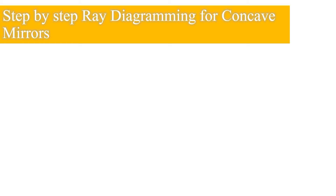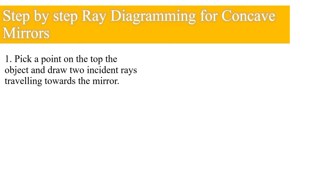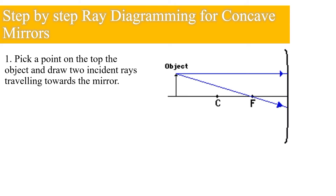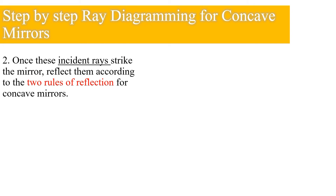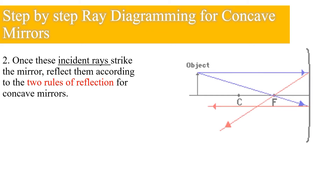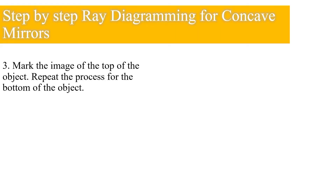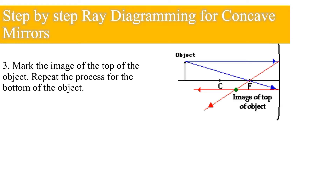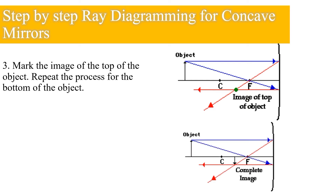Let us first know the steps to ray diagramming for concave mirrors. Step one: pick a point on the top of the object and draw two incident rays traveling towards the mirror. Step two: once these incident rays strike the mirror, reflect them according to the two rules of reflection for concave mirrors. Step three: mark the image of the top of the object and repeat the process for the bottom of the object.